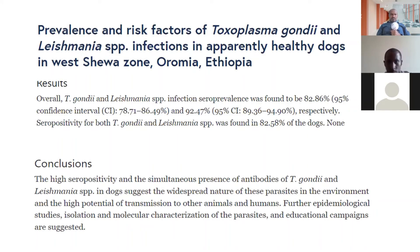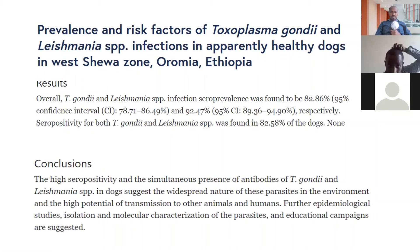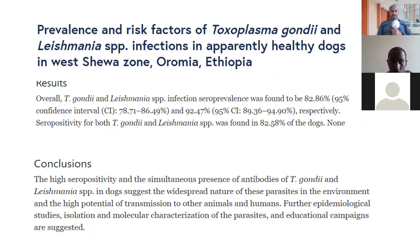Looking at the prevalence of leishmaniasis infection in Ethiopia, it is almost 92 percent seroprevalence in a study conducted in West Shoa Zone. Leishmaniasis, locally called kala-azar, has two forms in humans: cutaneous and visceral forms, transmitted mainly by sand flies. Canine leishmaniasis is one of the most commonly neglected diseases. Therefore, raising awareness among people about how it is transmitted is very important.